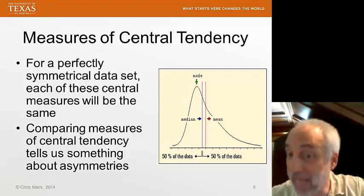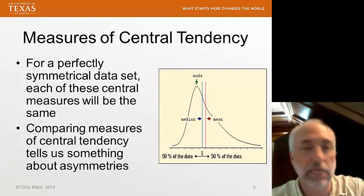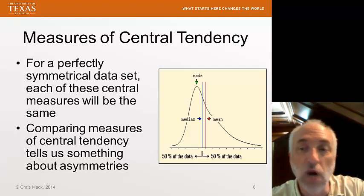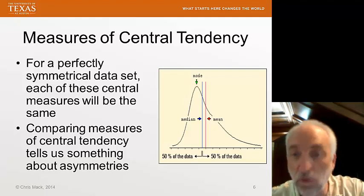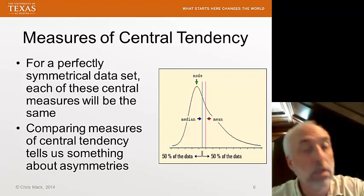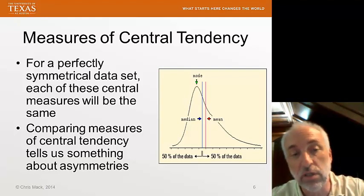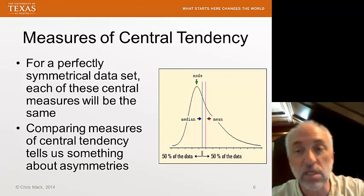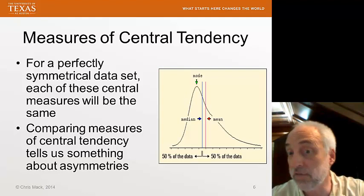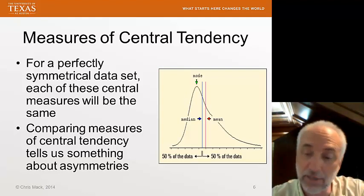These measures of central tendency will all line up if I have a perfectly symmetrical data set. But if I have an asymmetrical data set, like this graph shows, then the mode, the median, and the mean will all be different. For that reason, comparing measures of central tendency will tell us something about these asymmetries. If we see the mean and the median significantly different from each other, that is a very good indication that we've got an asymmetric data set, a data set with skew.